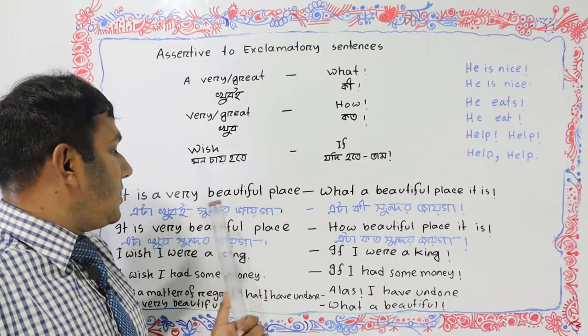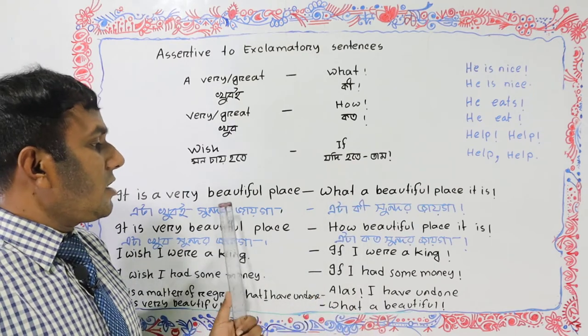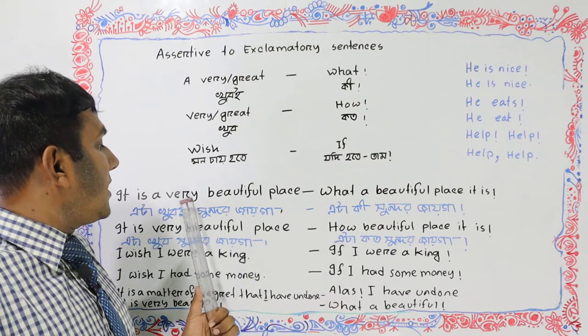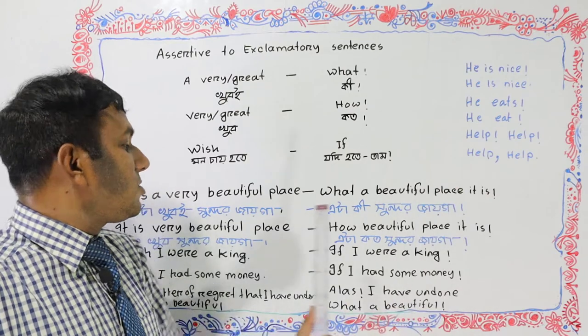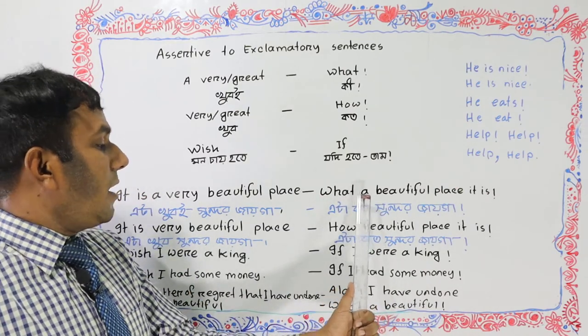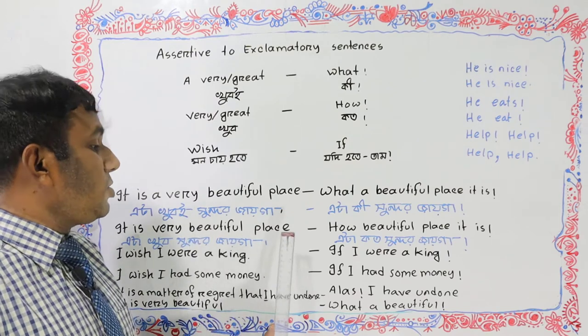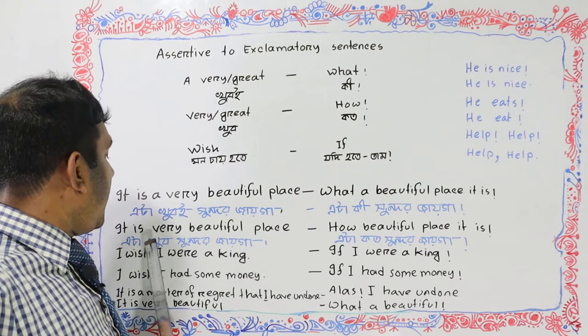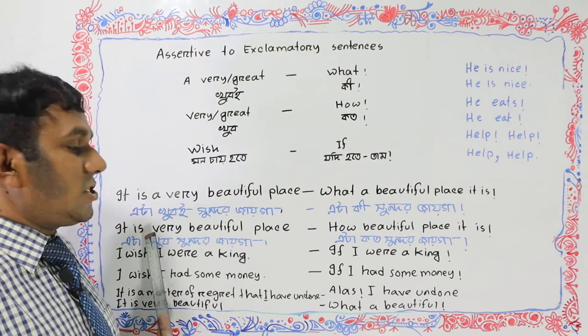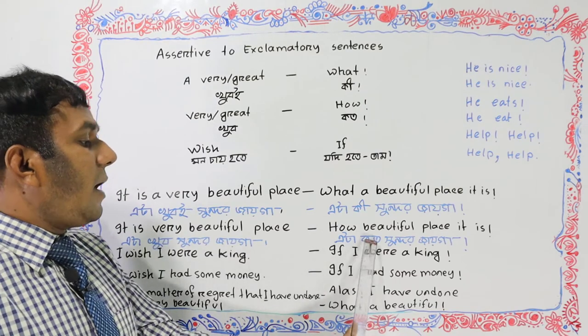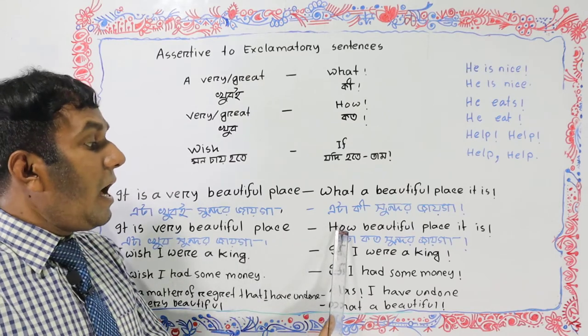What a beautiful place it is. In the assertive sentence it was 'It is a very beautiful place.' The 'very' is dropped and we use 'what'. The article 'a' remains with the noun. So it becomes 'What a beautiful place it is.'